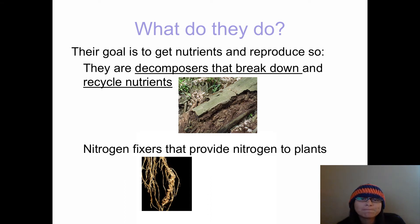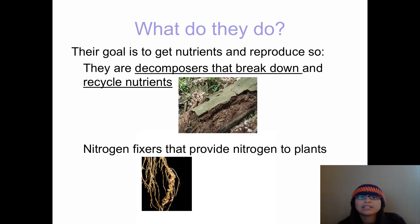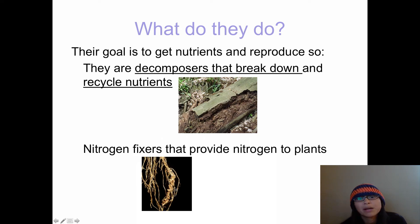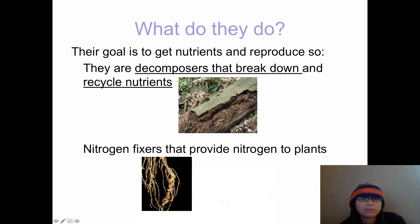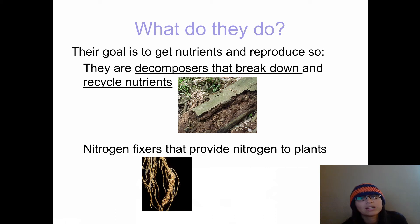Another important role: bacteria can be nitrogen-fixing bacteria, where they are the only ones that can take nitrogen gas out of the atmosphere and turn it into nitrogen that living things can actually use. If you look at this picture of a plant's roots, some plants have developed symbiotic relationships with nitrogen-fixing bacteria, creating little nodes on their roots that provide a place for nitrogen-fixing bacteria to grow and make nitrogen the plant can use right away.